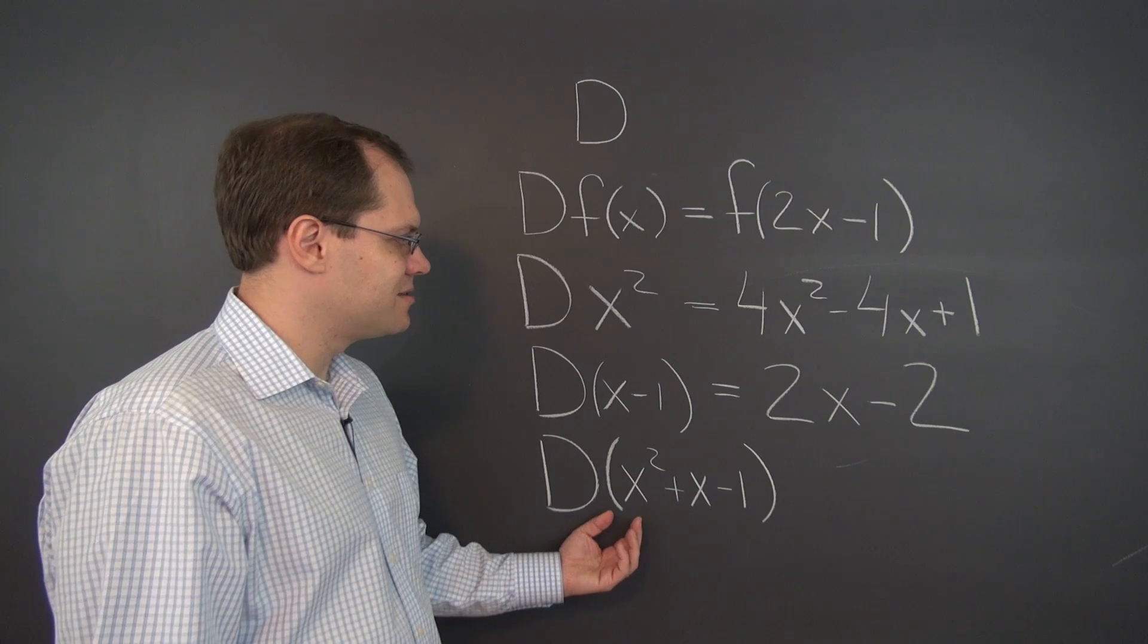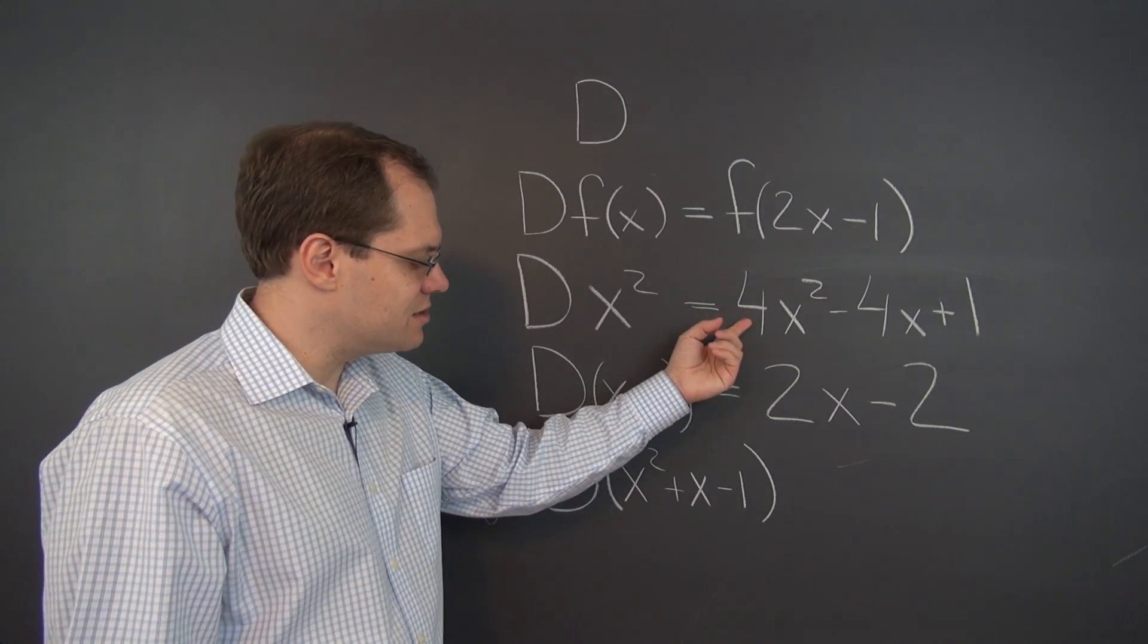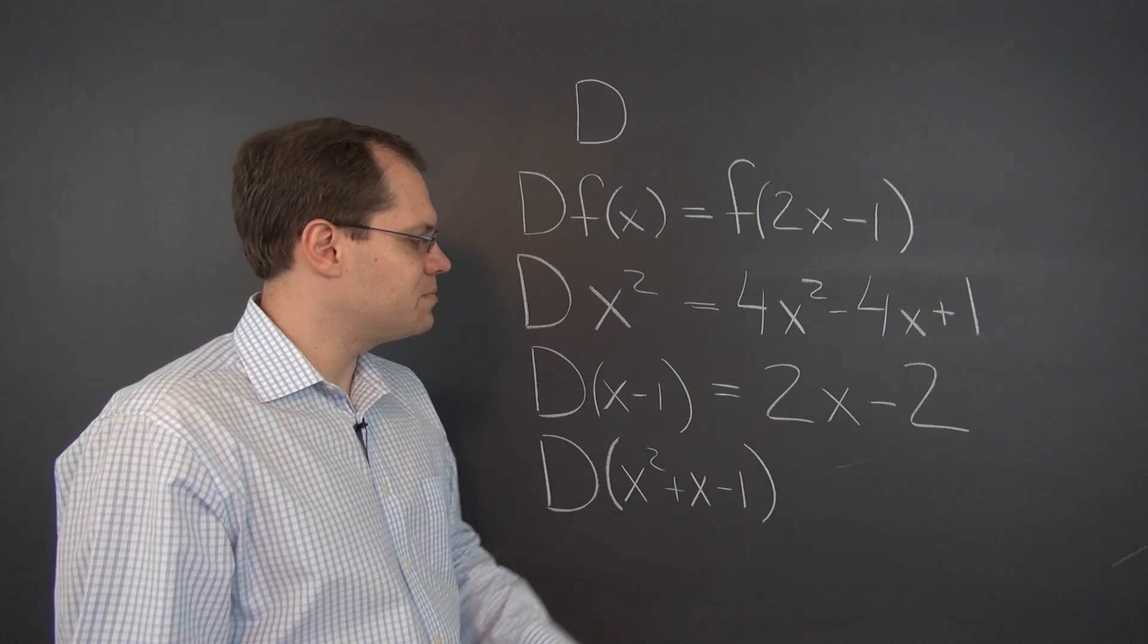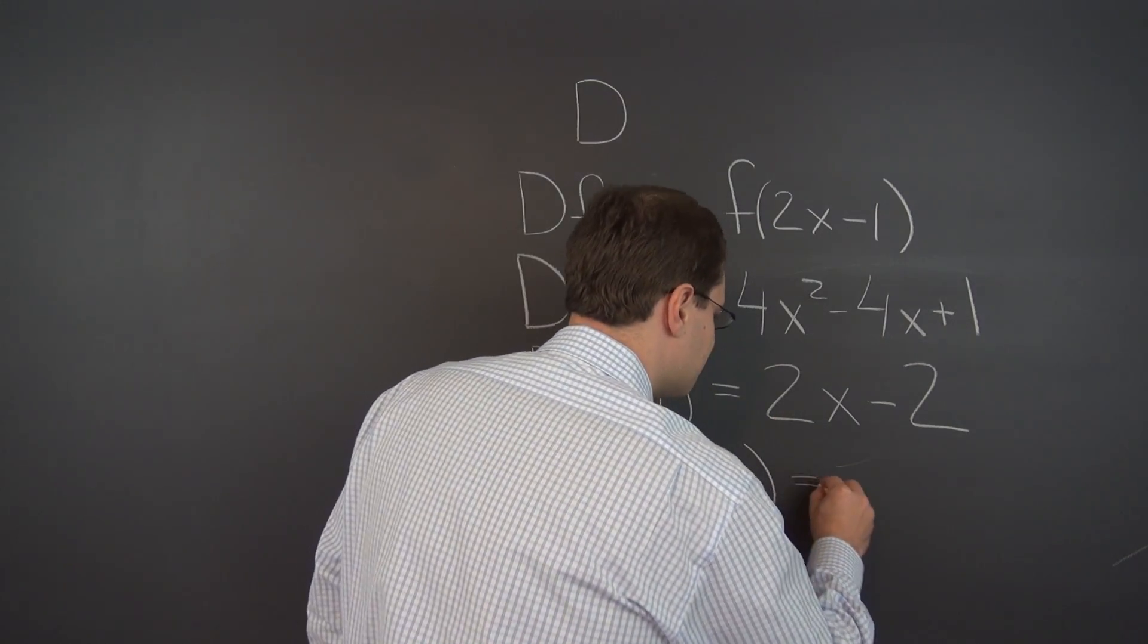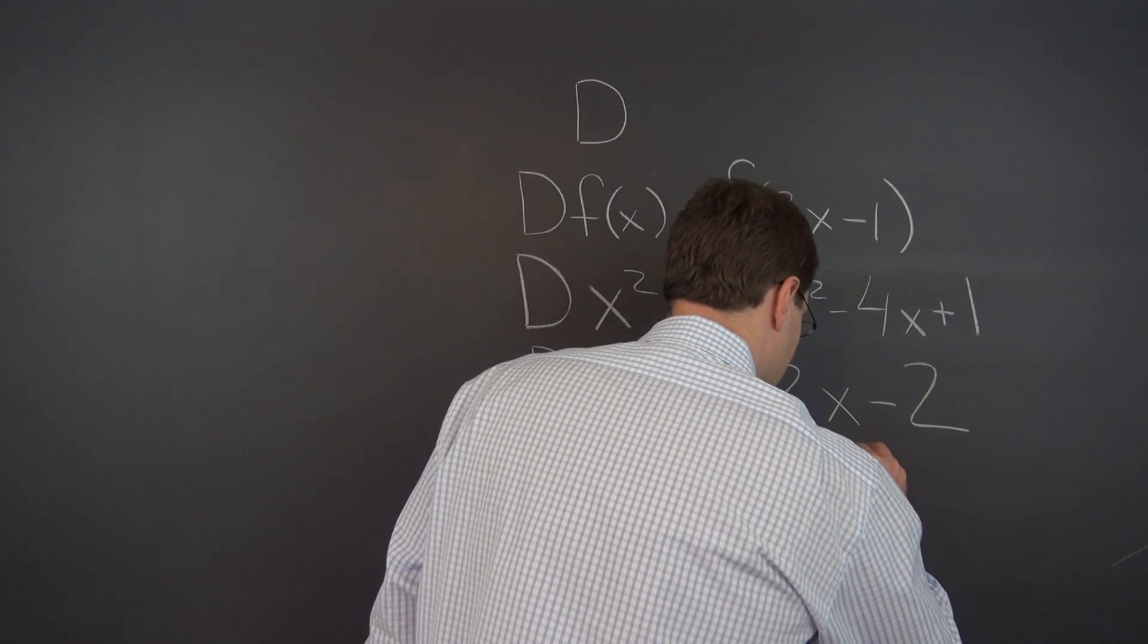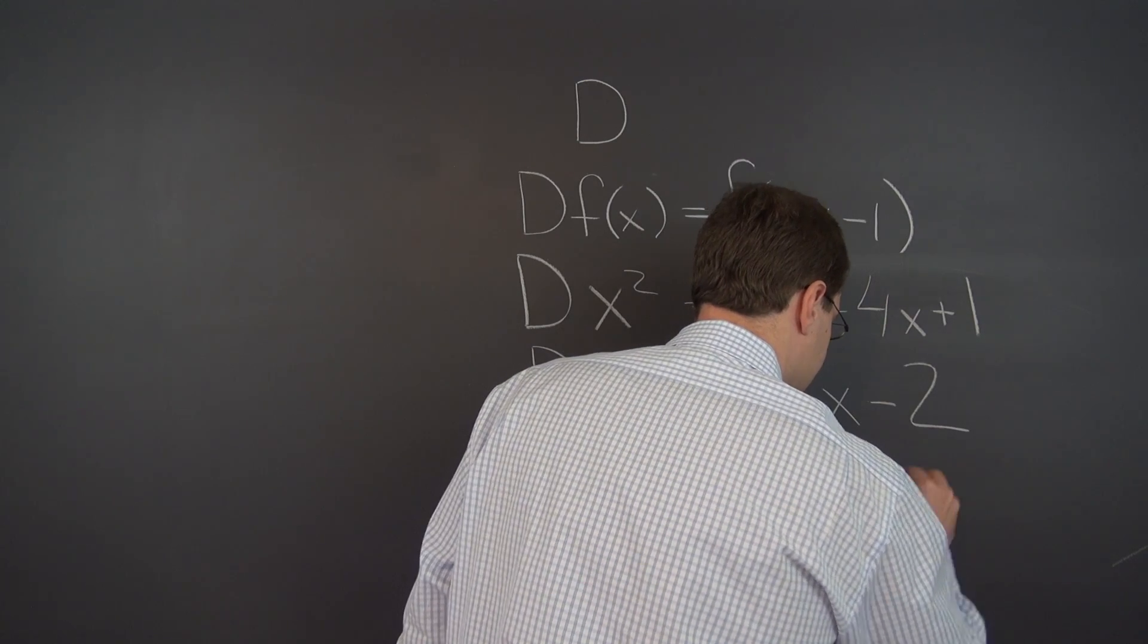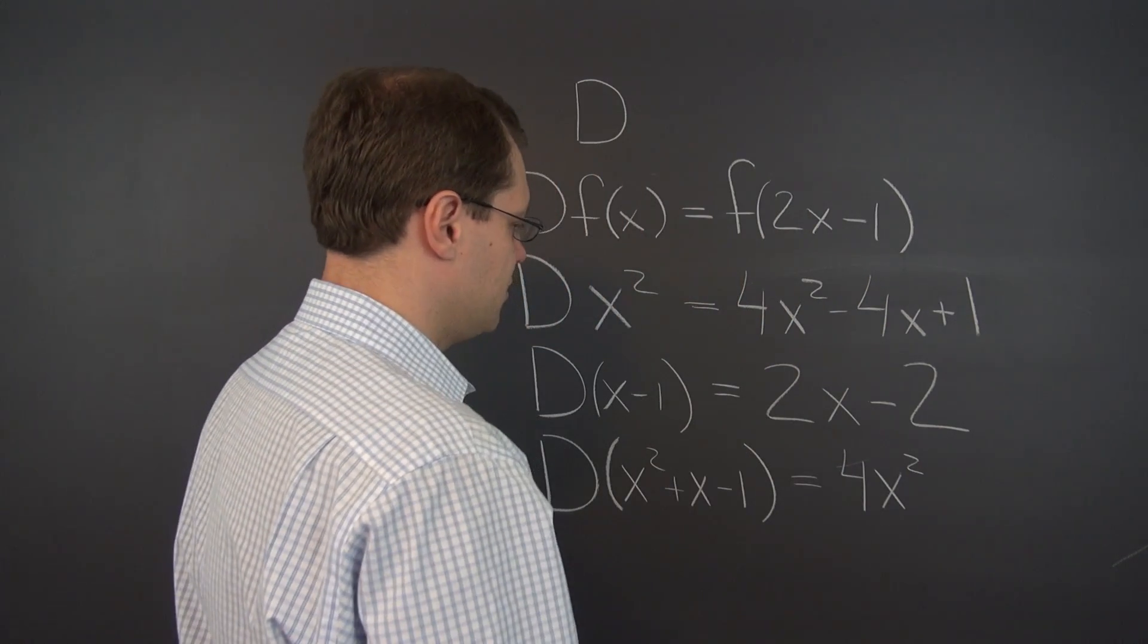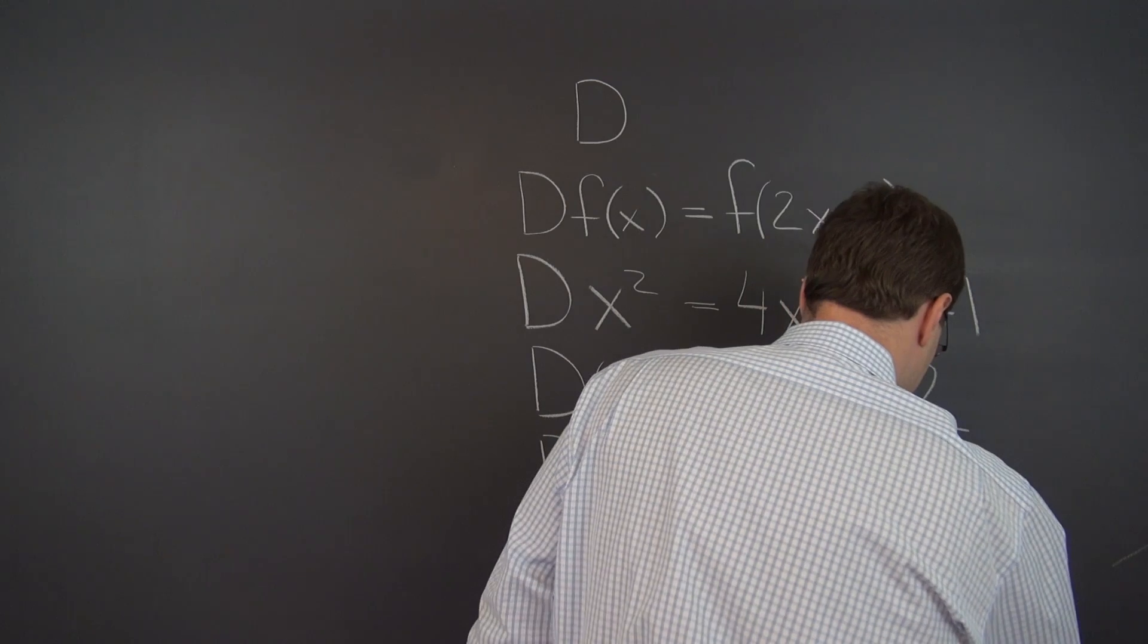Alright, so what we see is that this will produce this, and this part will produce this part. So the combined result is the sum of the two. So it's 4x² - 2x - 1.